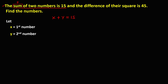From the other statement, the difference of their squares is 45. Since this is subtraction of their squares, the equation is x squared minus y squared equals 45.